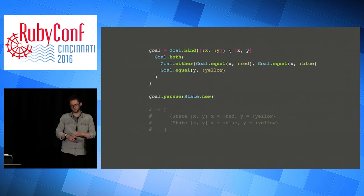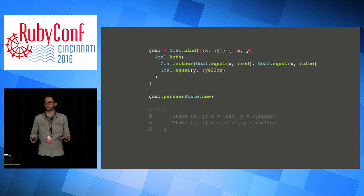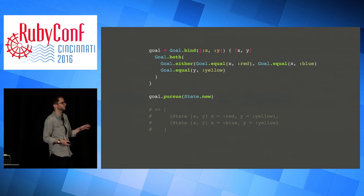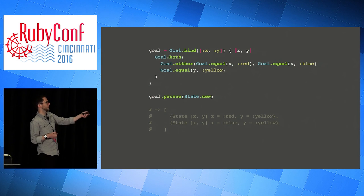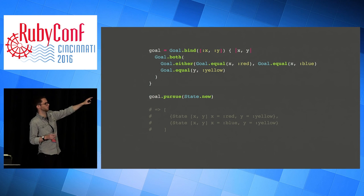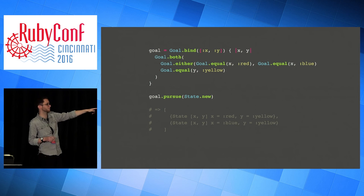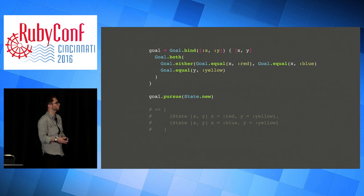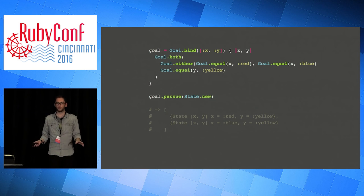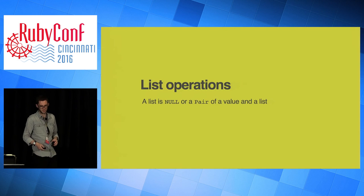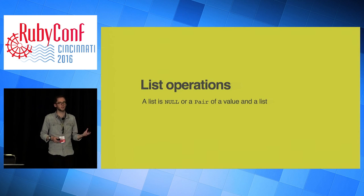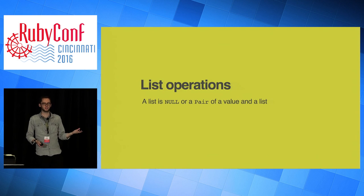What's useful about all these is that you can compose them. This actually forms a general purpose platform for doing computing - I think equivalent to a Turing machine. For example, if I make some variables x and y and say I want a goal where both: x is either red or blue, and y is yellow - when I pursue that, what I get is a state where x is red and y is yellow, and a state where x is blue and y is yellow. So you compose these things and it all just sort of works. It's probably not at all clear at this point what it's useful for or how you program with it. So by way of one brief example, you can use it to implement list operations.